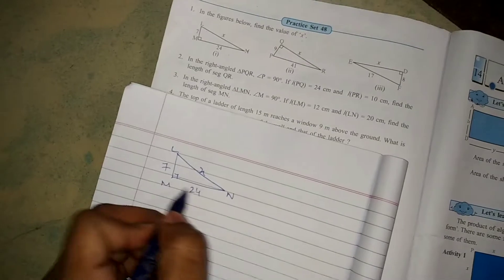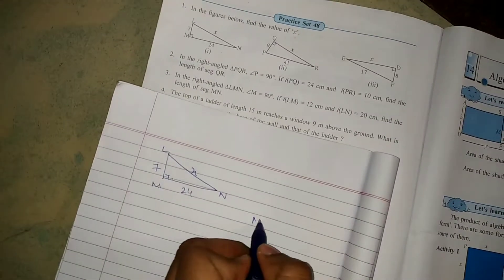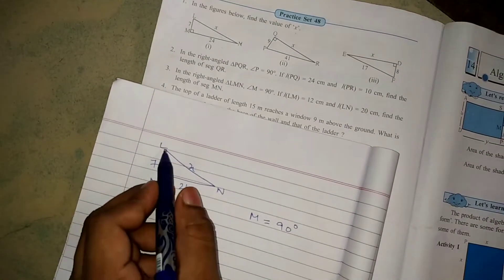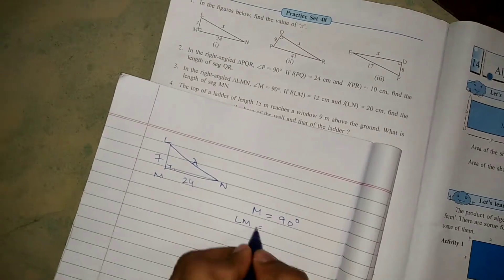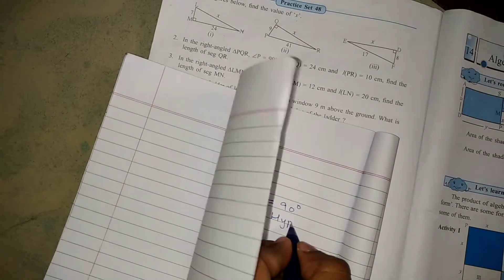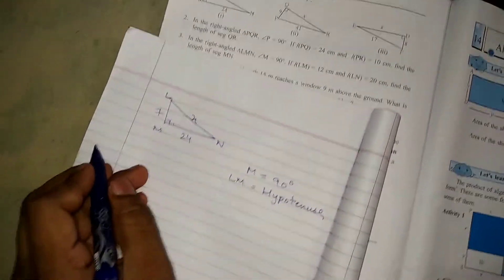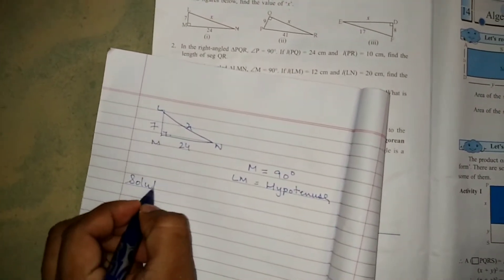I draw this diagram here. M is your 90 degree. LM is your hypotenuse side. Let's start the sums. First you have to write the solution here.